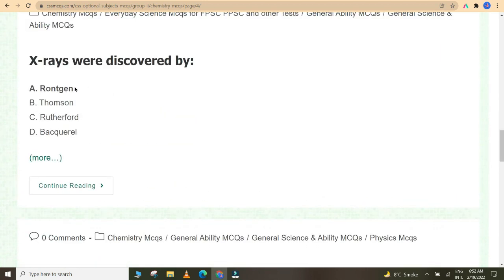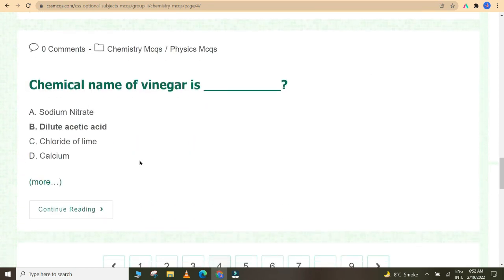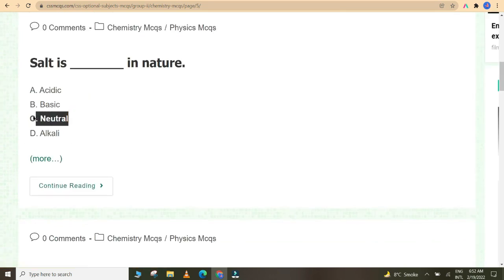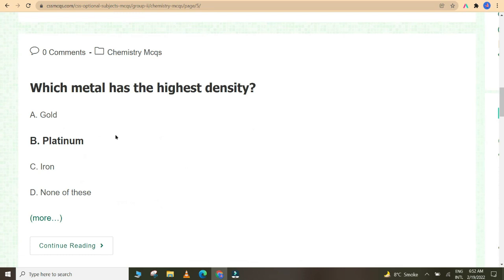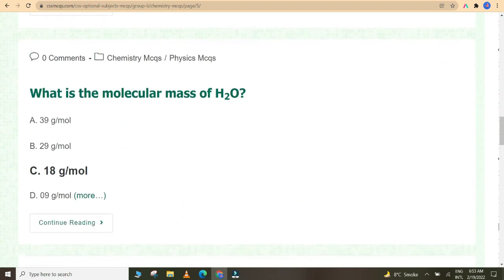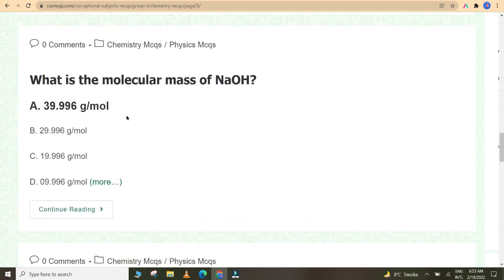X-rays were discovered by Röntgen. The most densest substance on earth is osmium. Chemical name of vinegar is dilute acetic acid. Salt is neutral in nature. Which metal has the highest density? Platinum. What is the second most abundant element in the earth's crust? Silicon. What is the molecular mass of H2O? 18 grams per mole. What is the molecular mass of NaOH? 39.996 grams per mole. What is the International System unit of pressure? Newton per meter square.